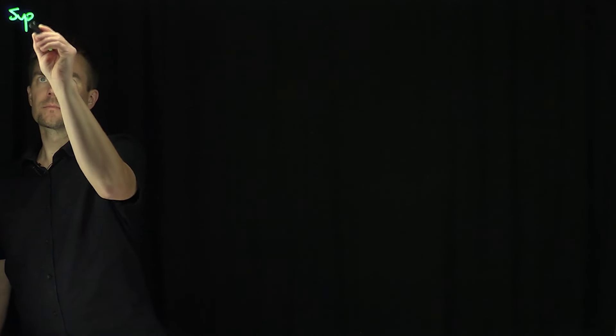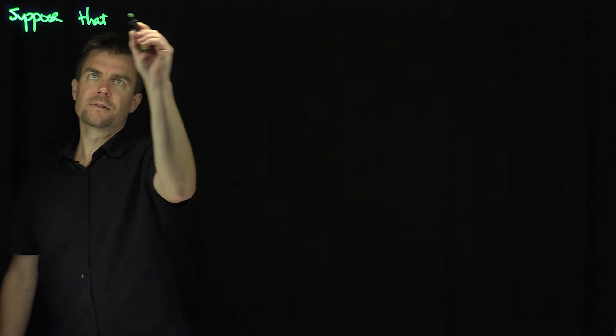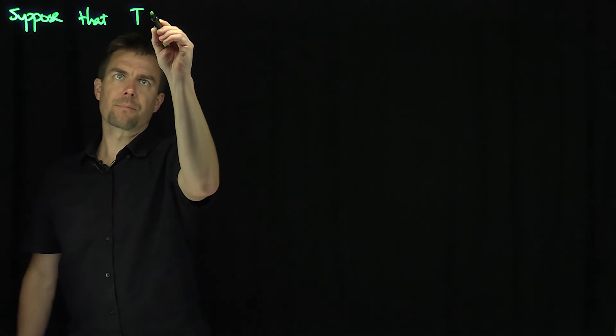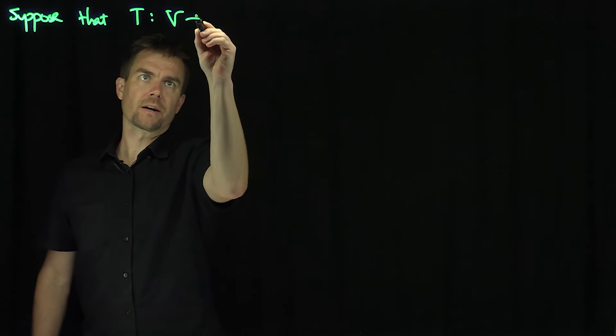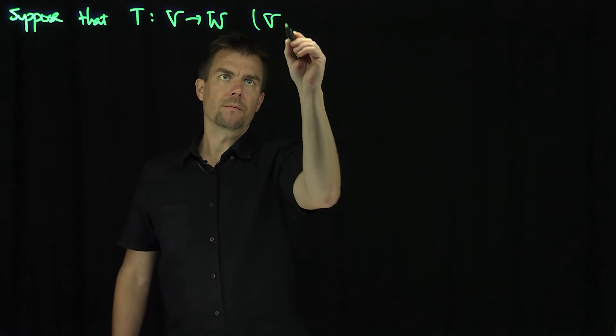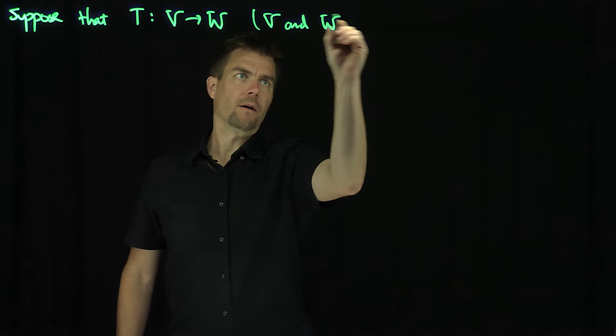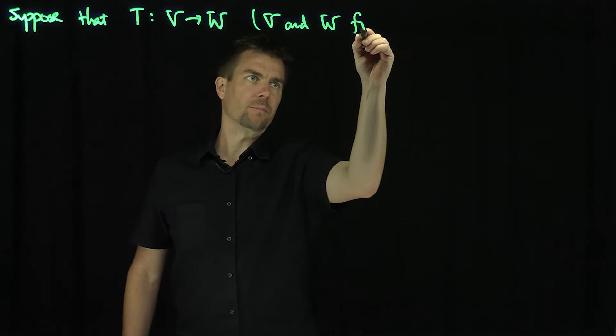Hello, students. In this video, we'll discuss the singular value decomposition for the adjoint of an operator and the inverse of an operator if it exists. Let's suppose that T is a linear operator between two finite dimensional inner product vector spaces V and W.